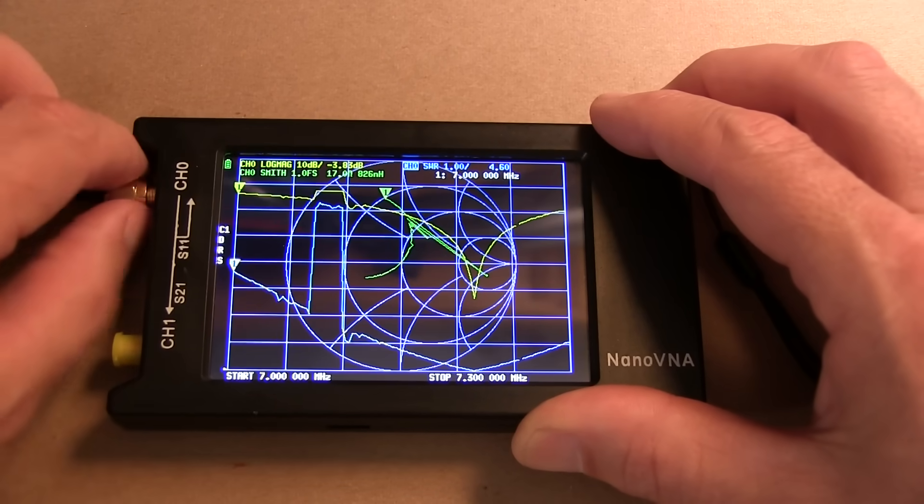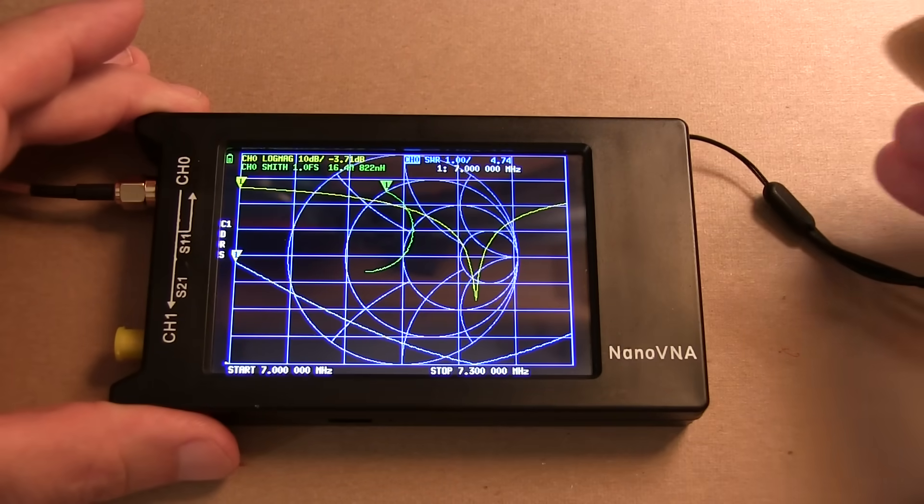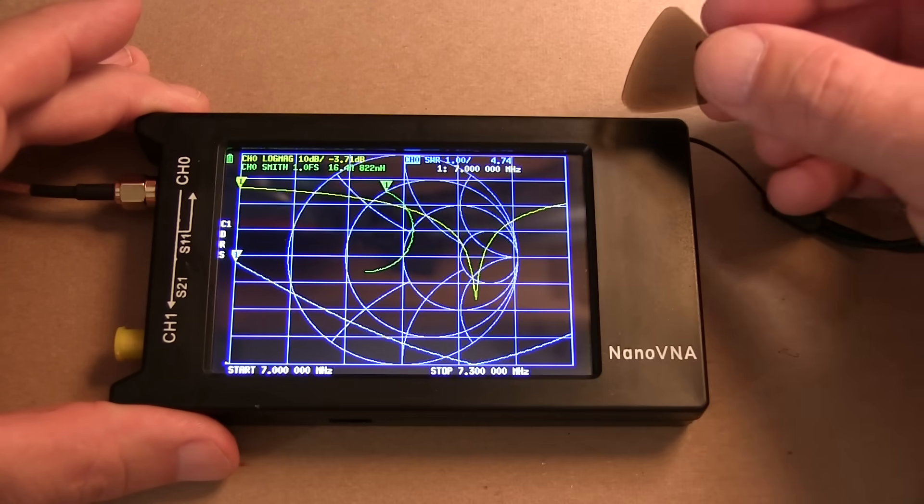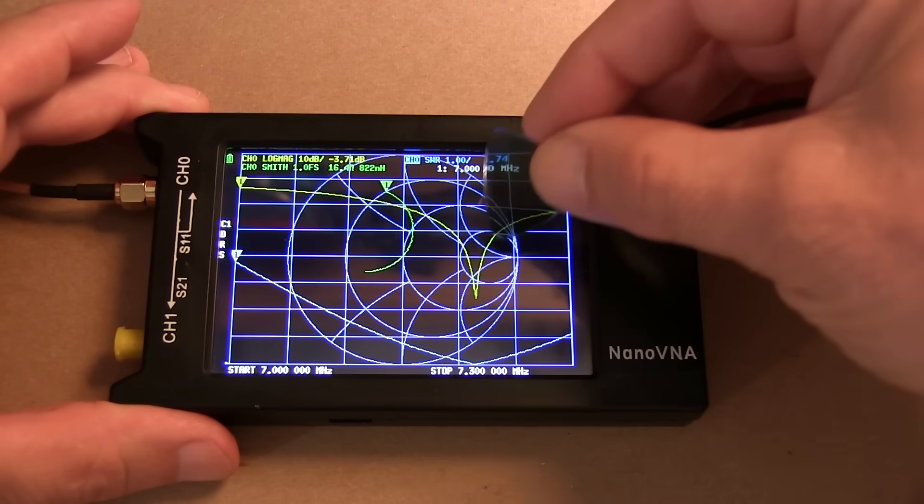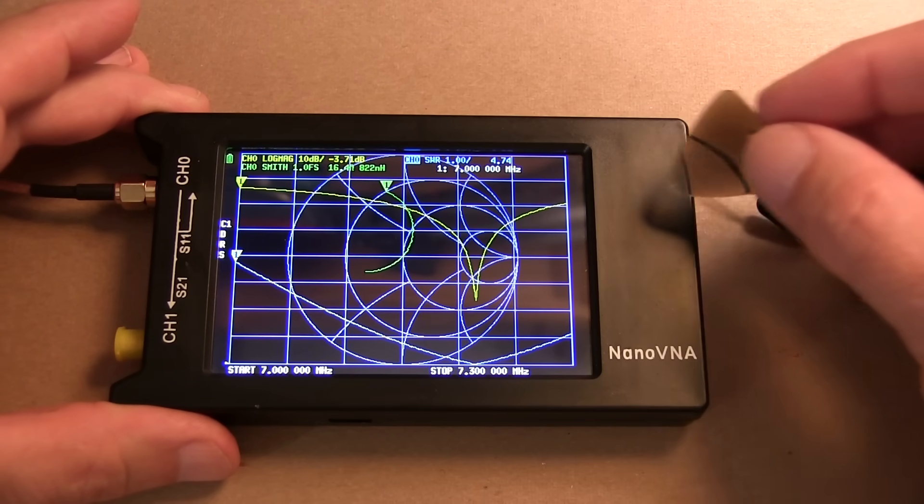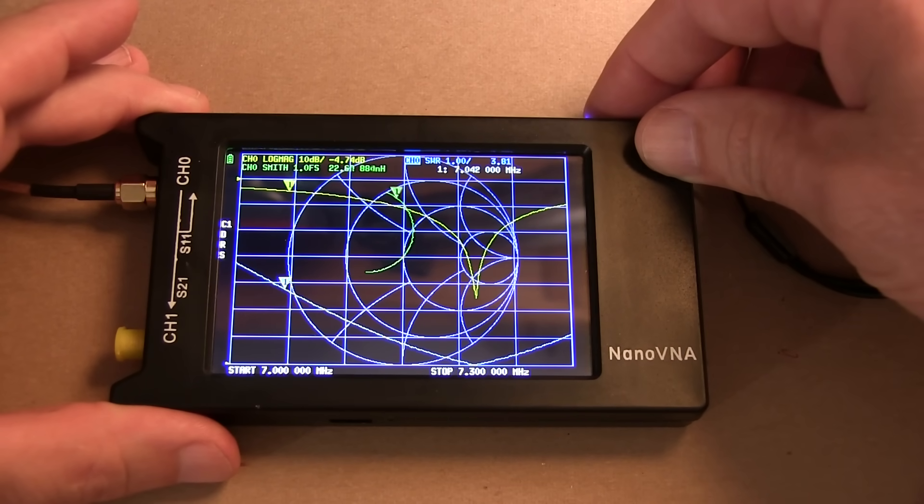So now we hook up the antenna. With the antenna hooked up, we can see our SWR plot over the 40 meter band. We can see the log magnitude of the reflection coefficient, and we can see the Smith chart. And we can use the jog wheel to move our cursor, our marker, to make measurements at various frequencies across the range.